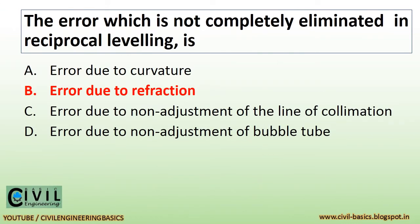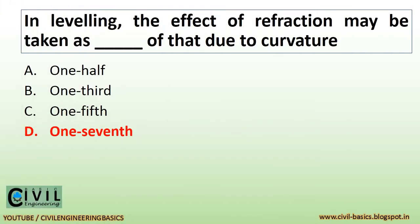The error which is not completely eliminated in reciprocal leveling is error due to refraction. In leveling, the effect of refraction may be taken as one-seventh of that due to curvature.